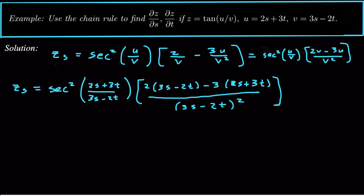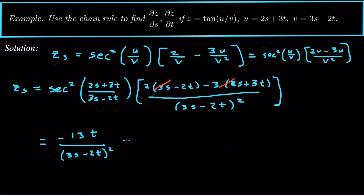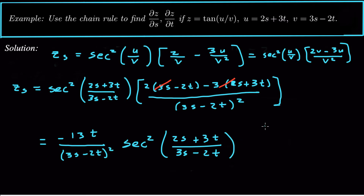Now we simplify by distributing. We get 6s and 6s which cancel, and then −4t and −9t gives −13t in the numerator. So this reduces to −13t / (3s−2t)² · sec²((2s+3t)/(3s−2t)). That is our final answer for ∂z/∂s.